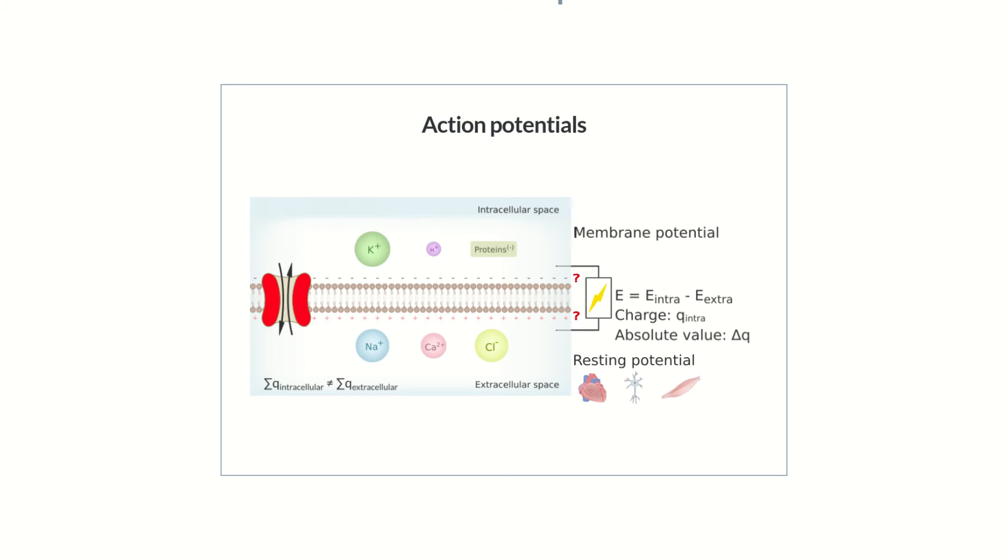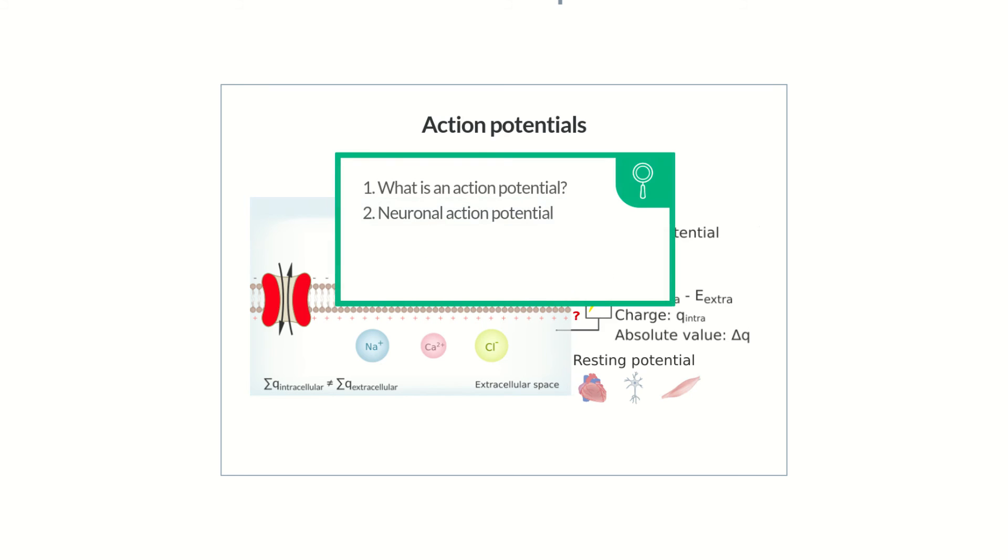We'll explore the underlying processes in detail. Episode 2 focuses on the neuronal action potential, whereas Episode 3 focuses on the action potential in skeletal muscle cells. We'll wrap things up in Episode 4 with the myocardial action potential.